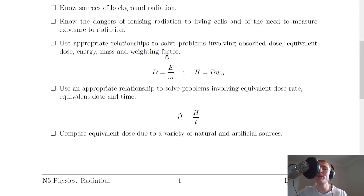Next it says to use appropriate relationships to solve problems involving absorbed dose, equivalent dose, energy, mass and weighting factor. We've got D equals E over M, that's your absorbed dose equals the energy absorbed divided by the mass and then your equivalent dose H equals the absorbed dose D times your radiation weighting factor. When you're doing problems involving this equation you'll often need to use the data sheet to find the values of the radiation weighting factor if they're not given to you.